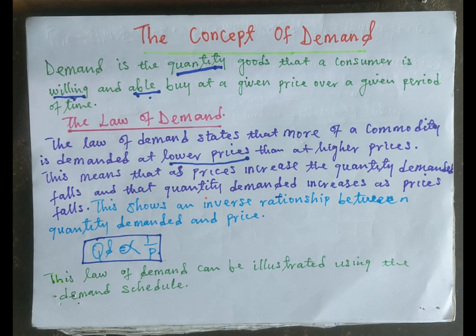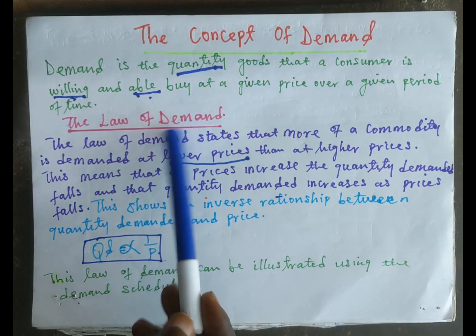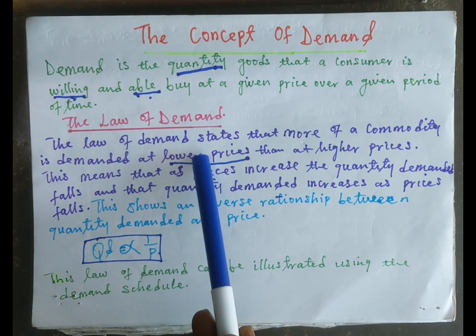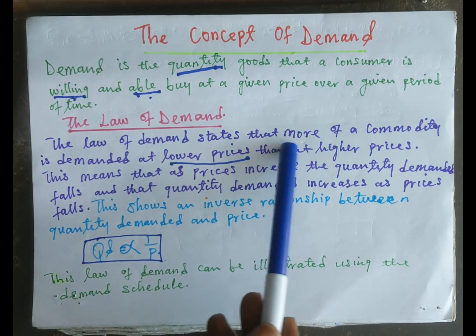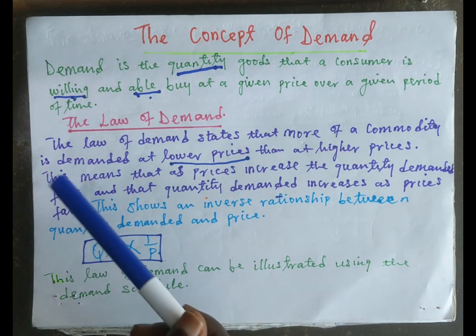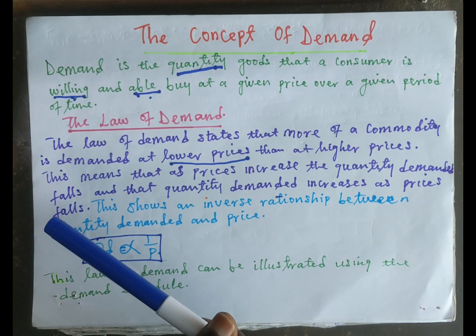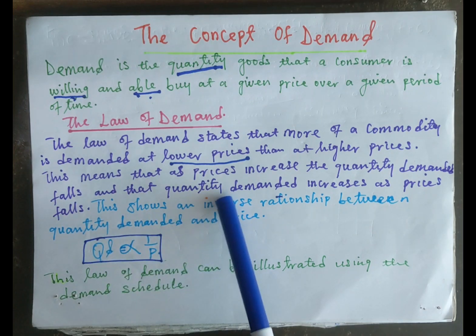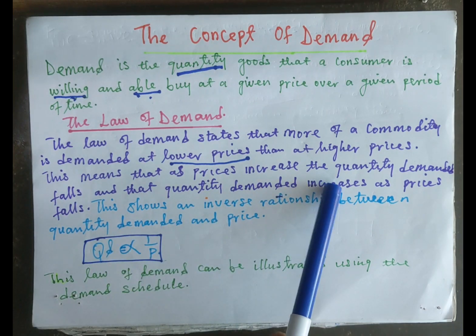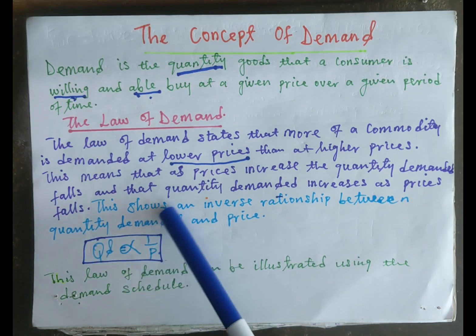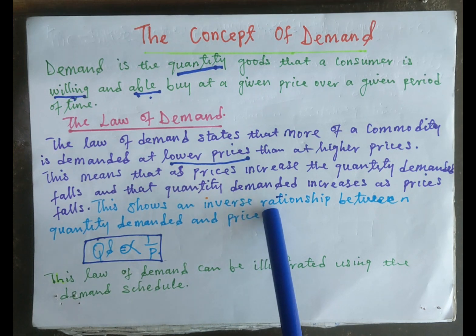We can now state the law of demand. The law of demand states that more of a commodity is demanded at lower prices than at higher prices. This means that as price increases, the quantity demanded falls, and that the quantity demanded increases as price falls. This shows an inverse relationship between price and quantity demanded.